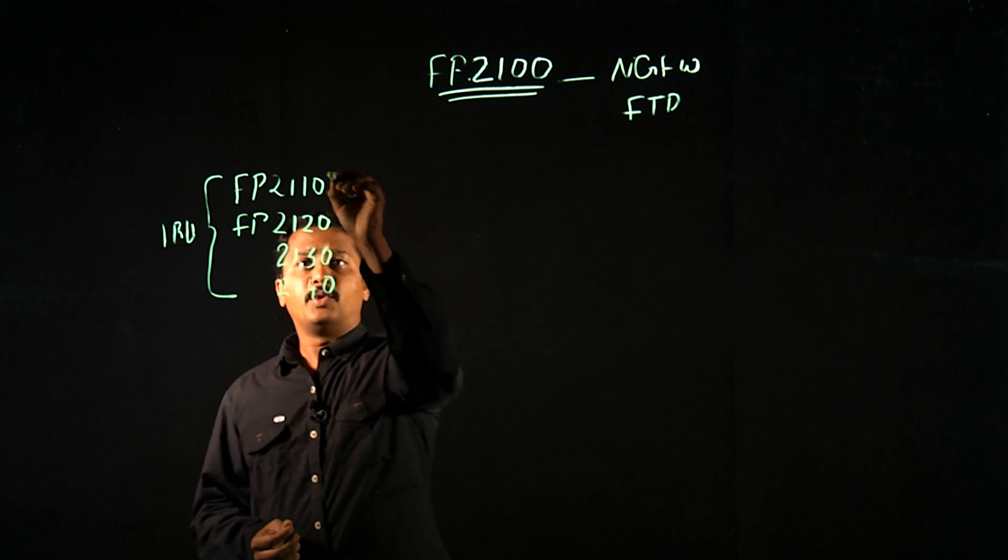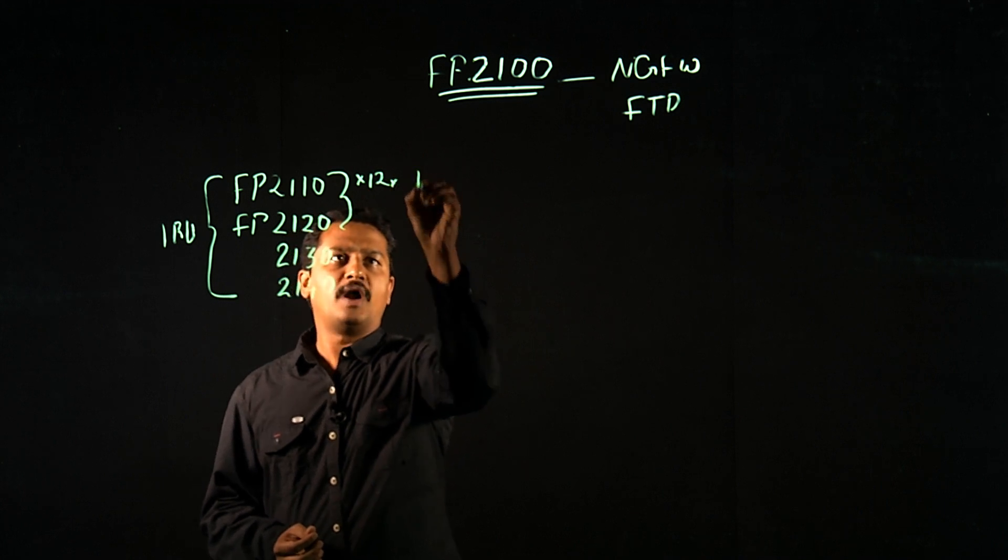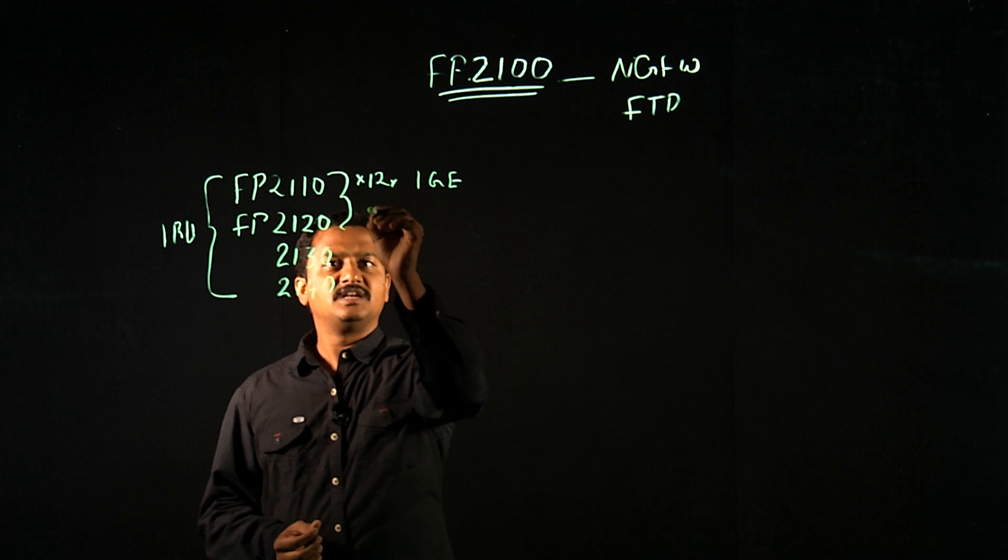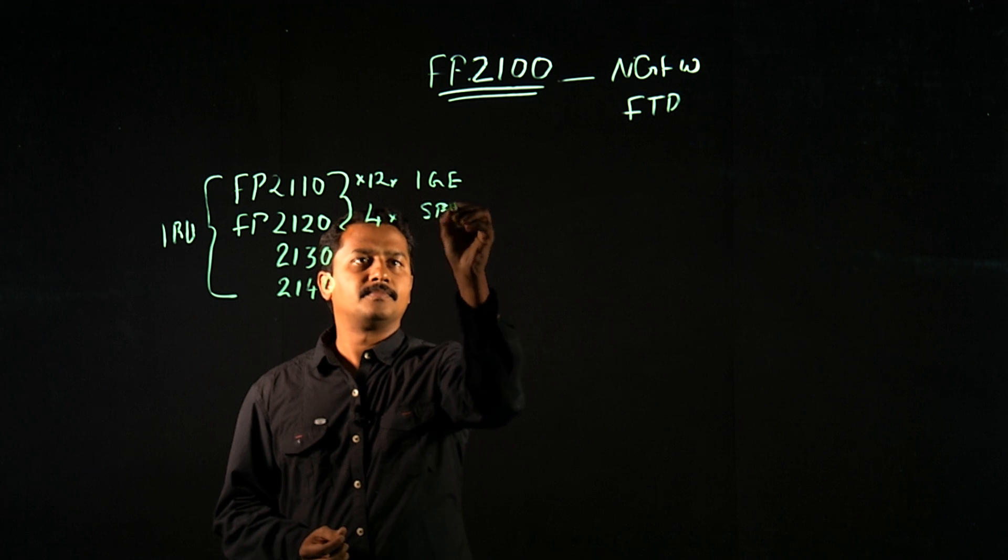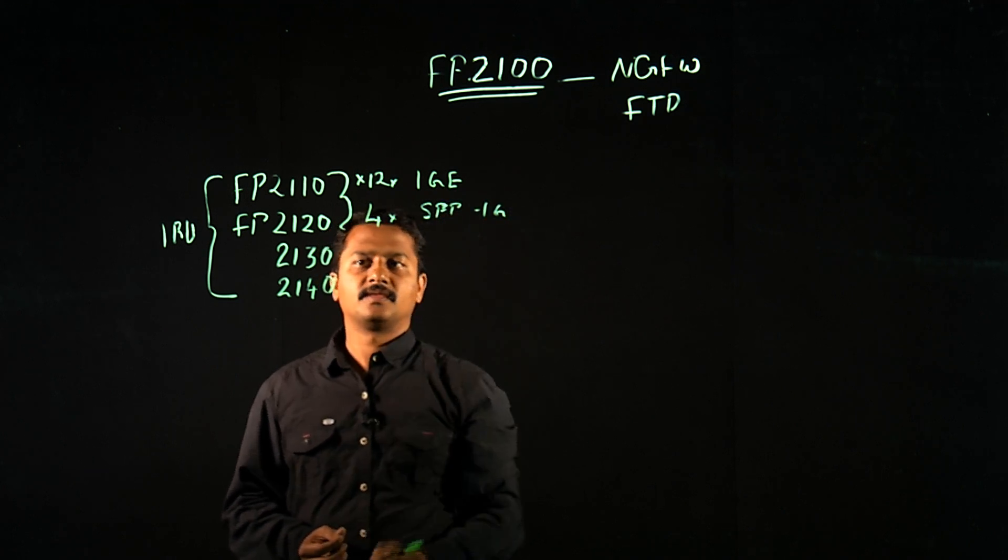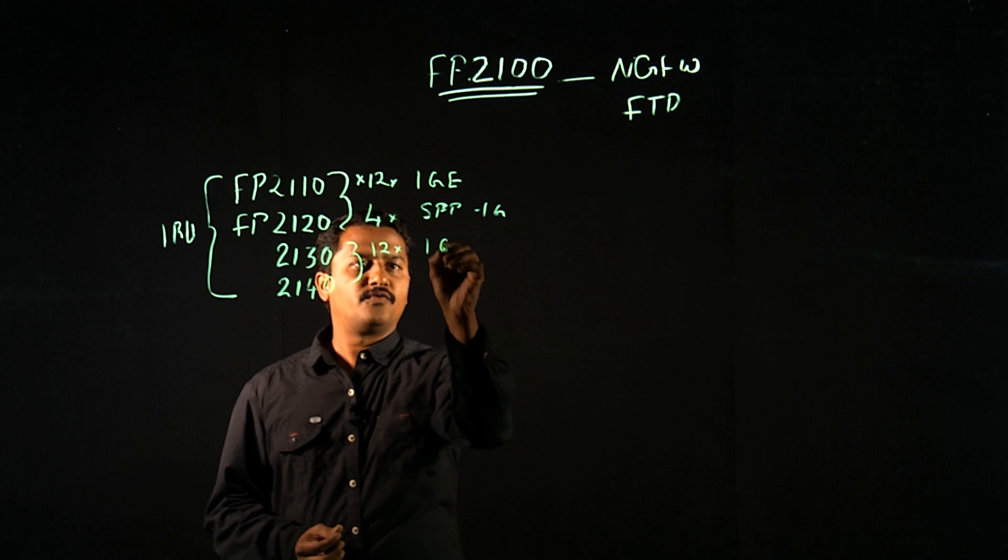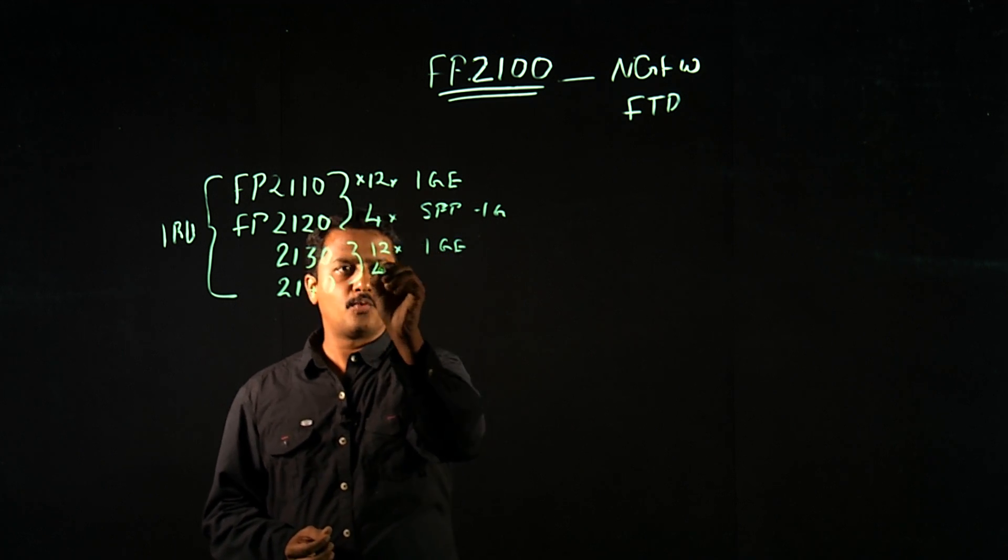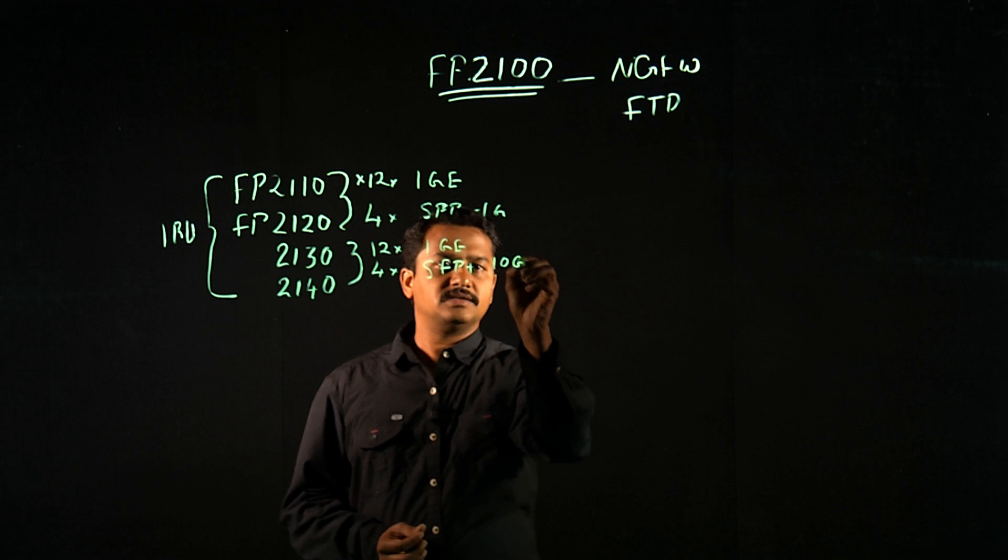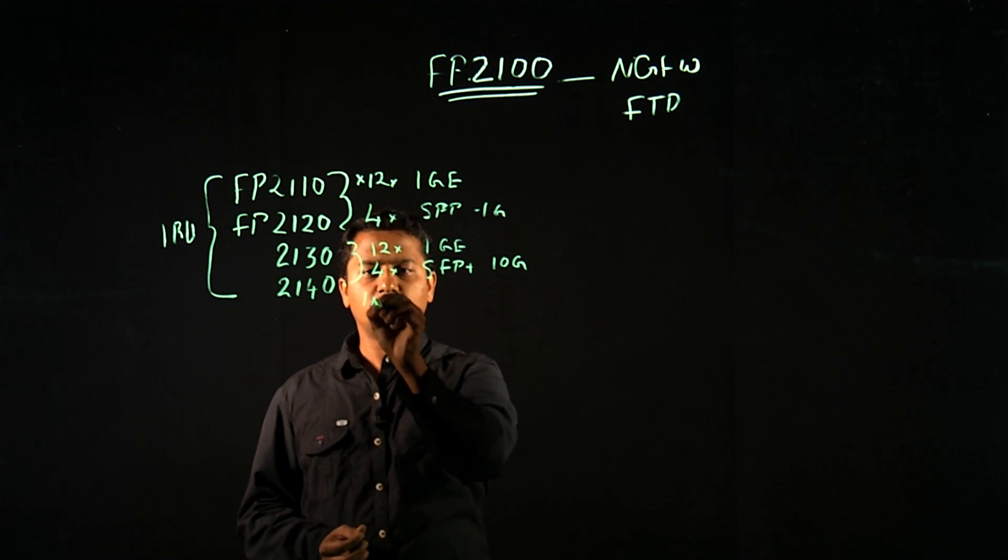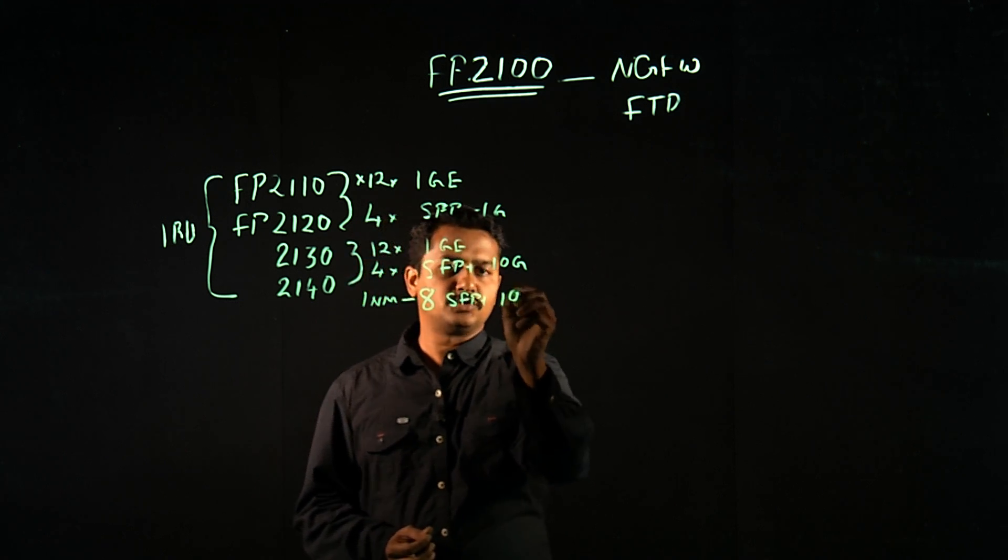This Firepower 2110 and 20 has 12 ports, 1 gig fixed Ethernet interface. Additionally, we have four port SFP interface, which is of 1 gig speed. On 2130 and 40, we have 12 1 gig fixed Ethernet interface, plus we have four port SFP plus interface, which is of 10 gig interface speed. And we have one network module, which can take eight SFP interface, which supports 10 gig interface.